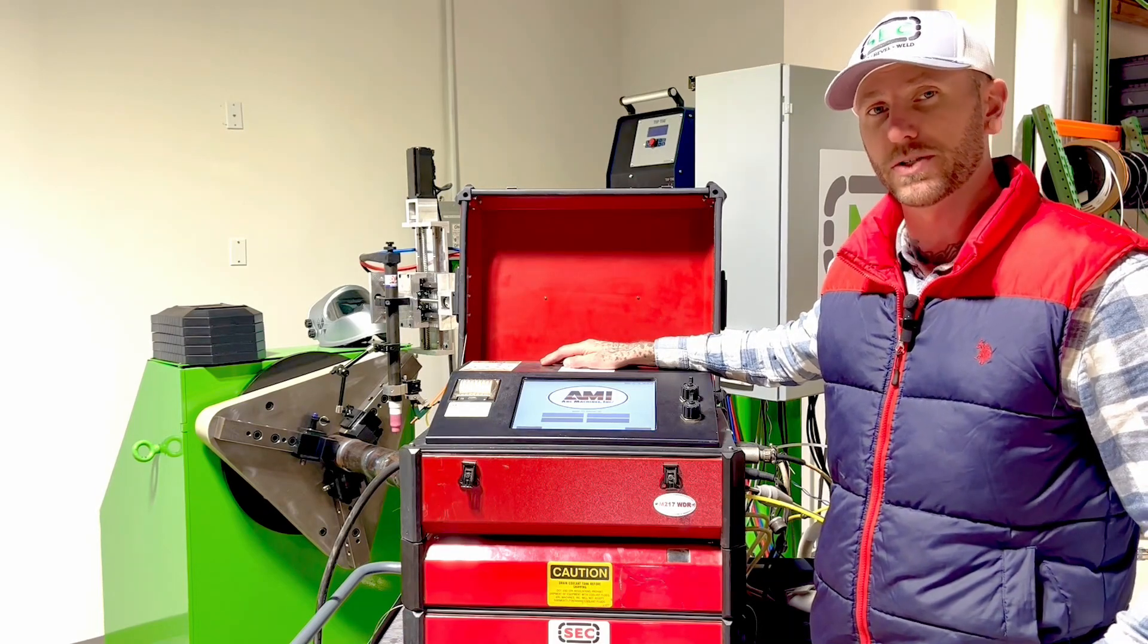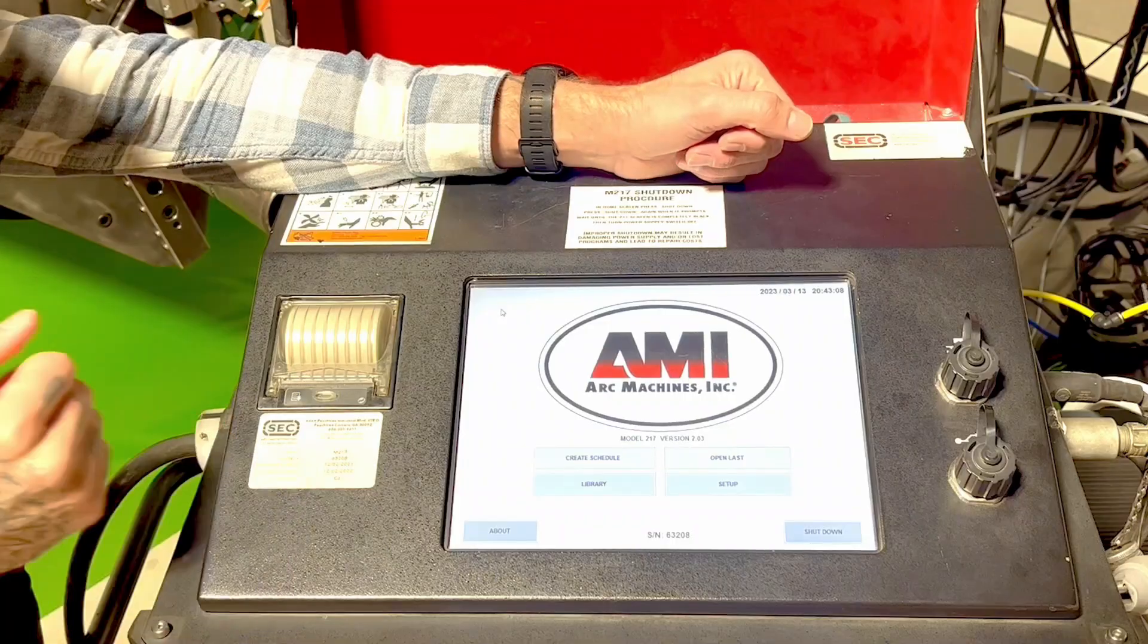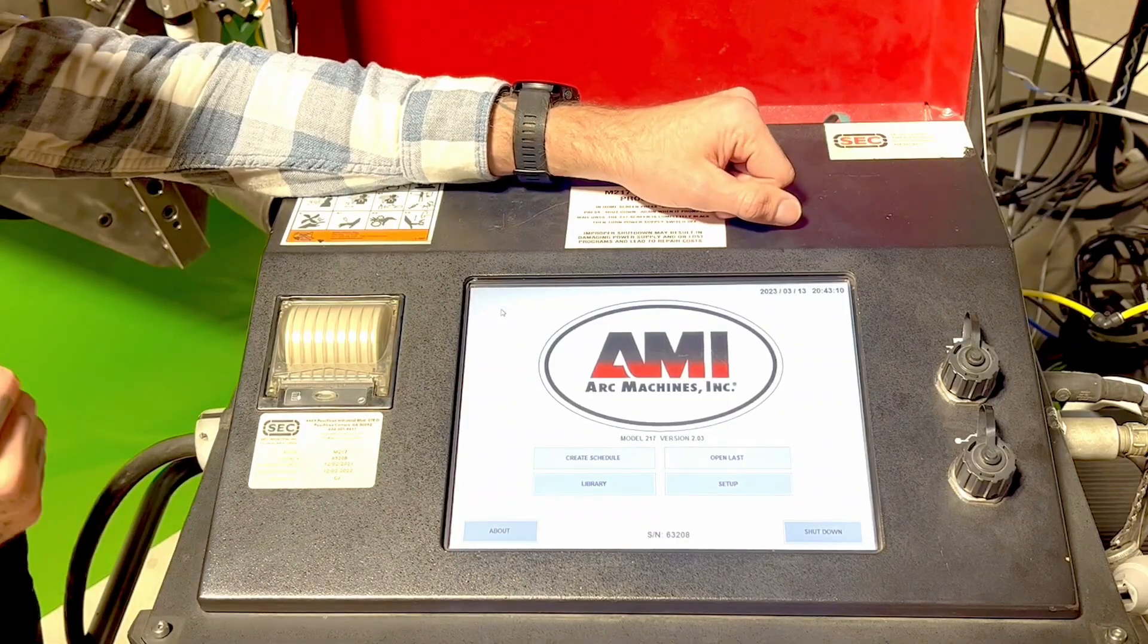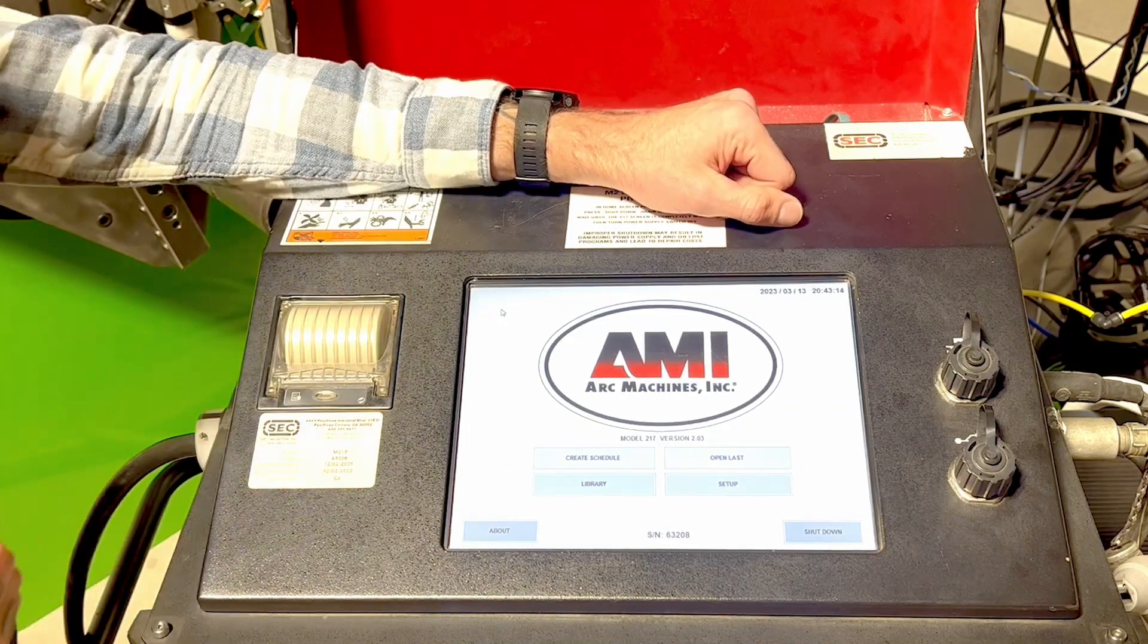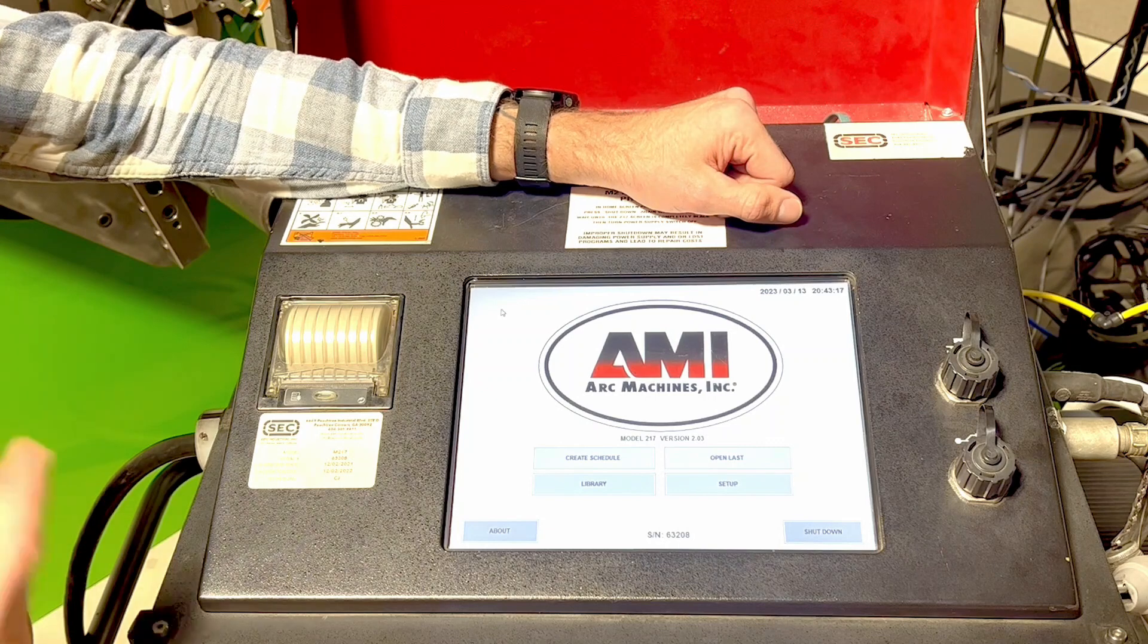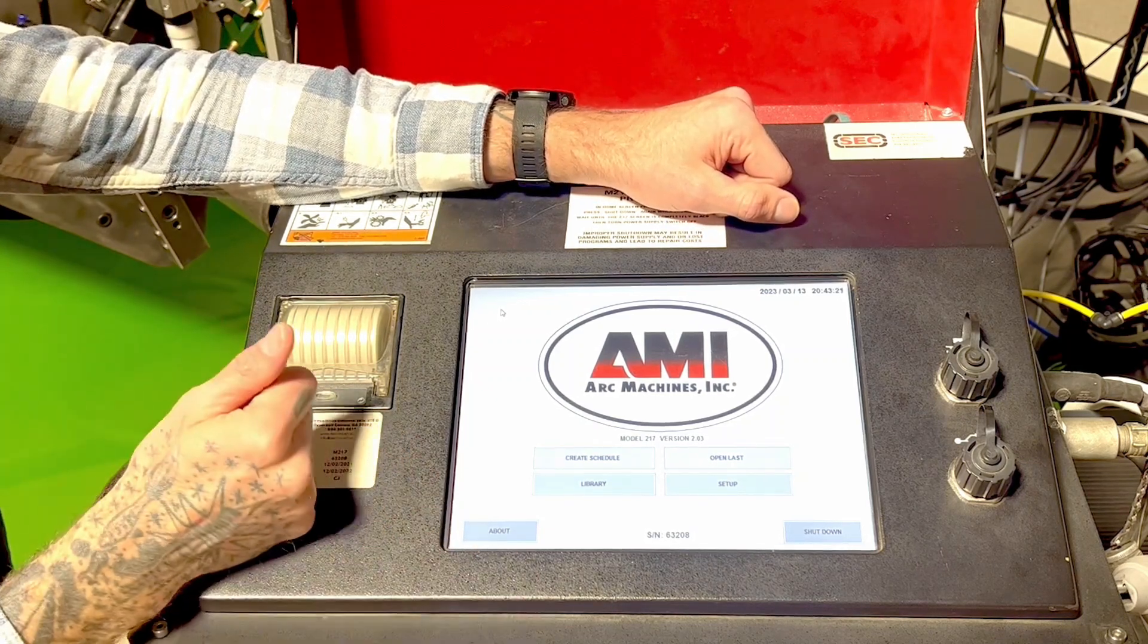Now let's dive a little bit deeper into the differences between the 217 and some former power supplies by AMI. If you have familiarity with AMI power supplies you'll notice that this looks fairly similar to the 207 or 227. One main difference is that when you open up the top it has a large modern touchscreen.